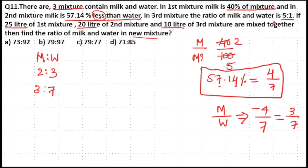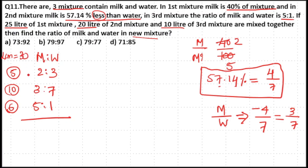The third mixture has a milk to water ratio of 5:1. Now, the total parts are: first mixture 2+3=5 parts, second mixture 3+7=10 parts, third mixture 5+1=6 parts. The LCM of 5, 10, and 6 is 30. To make all totals equal to 30: multiply the first ratio by 6 (5×6=30), multiply the second ratio by 3 (10×3=30), and multiply the third ratio by 5 (6×5=30).